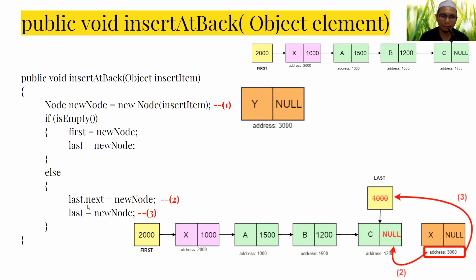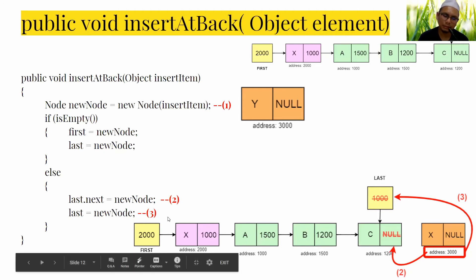We assign the new node's address into last.next. This links the current last node, which contains C, to the new node. We copy the address of the new node into last.next so the previous last node now links to the new node.